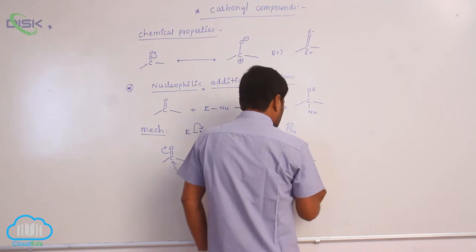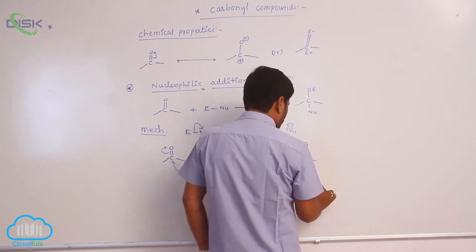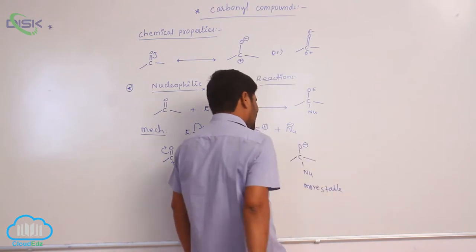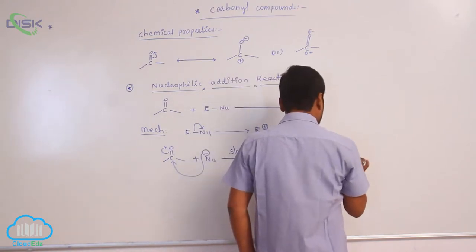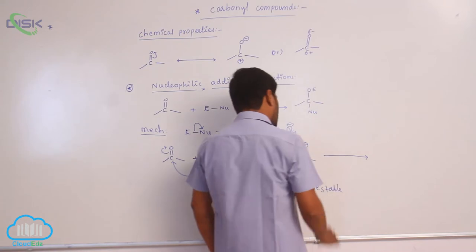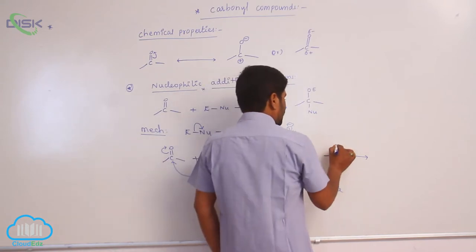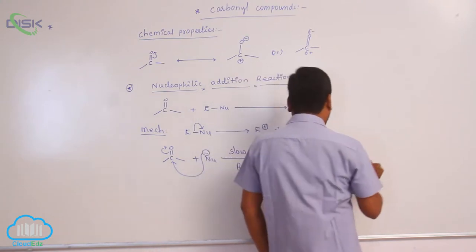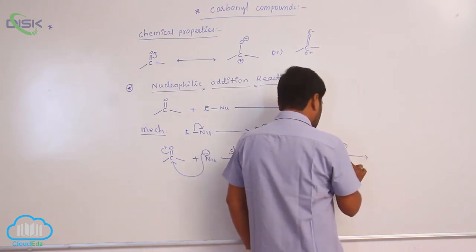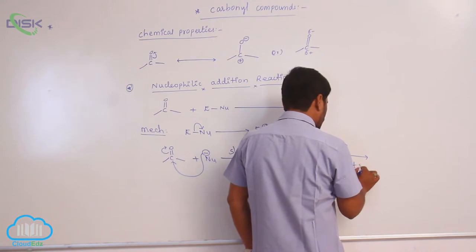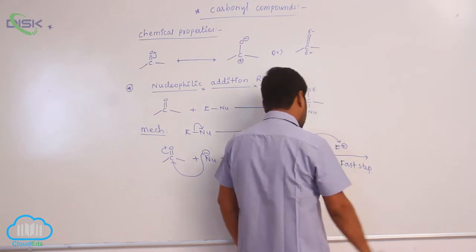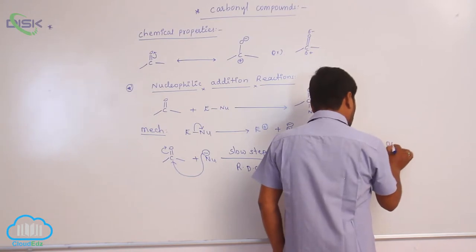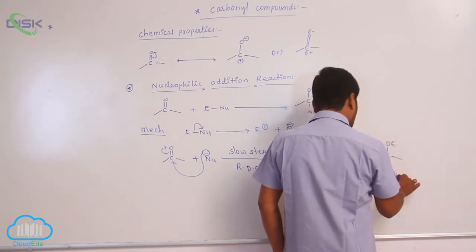This slow step forms an intermediate. This intermediate is more stable because the more electronegative oxygen carries the negative charge. After the attack of the nucleophile, the electrophile is then added in the next step. This step is the fast step. So the product is O-E with Nu attached to the carbon.